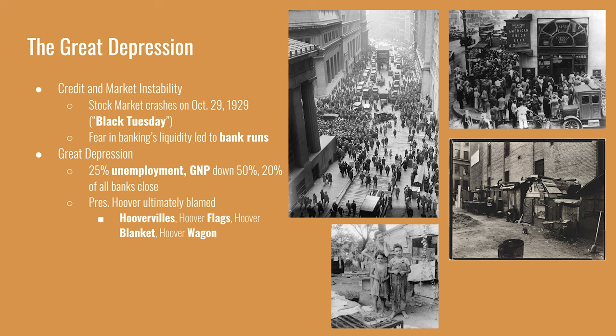Shanty towns that popped up across the country were called Hoovervilles. People who turned out their empty pockets were showing their Hoover flags. People sleeping on the ground covered with newspaper were using Hoover blankets, and cars with engines removed and pulled by horses were called Hoover wagons. The Great Depression became closely associated with President Hoover, even though he didn't cause the initial spark — it was his inaction that linked his name to the worst parts of the Depression.